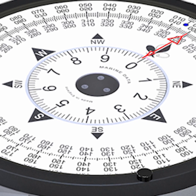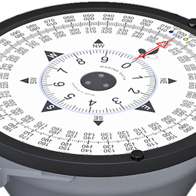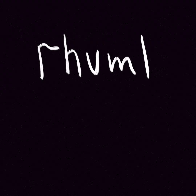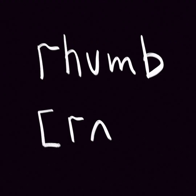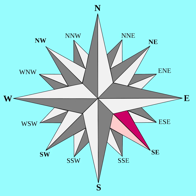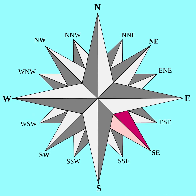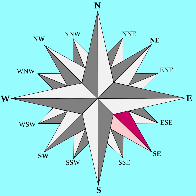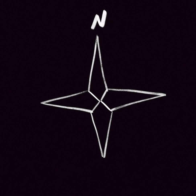Apart from degrees, there is one more way to describe direction at sea — I mean the rhumb system. The word rhumb can be interpreted as direction as well. There are four main rhumbs: North, South, West, and East.